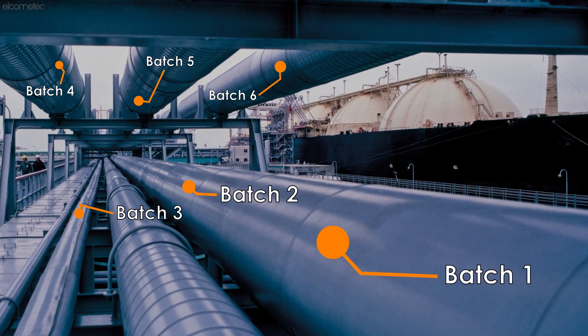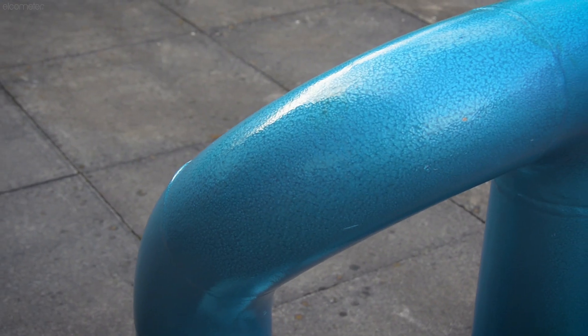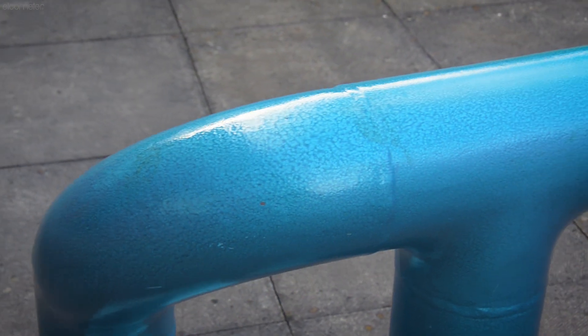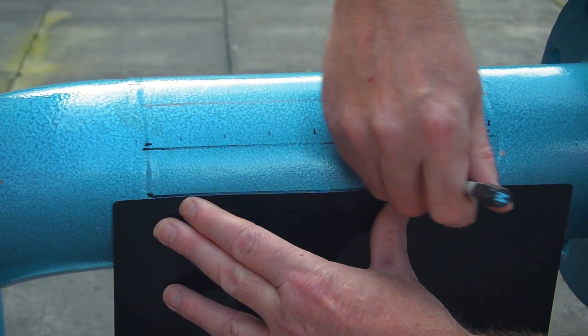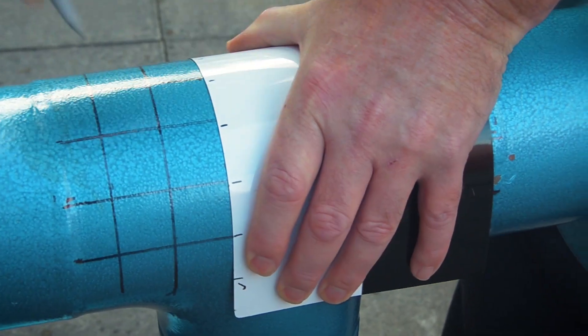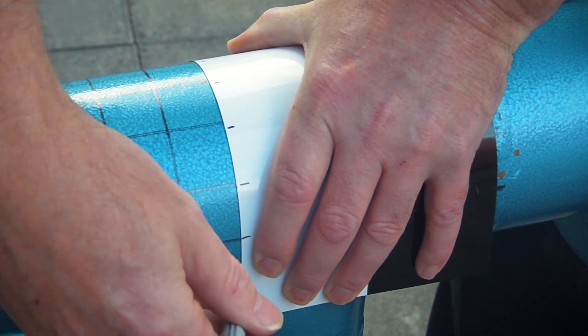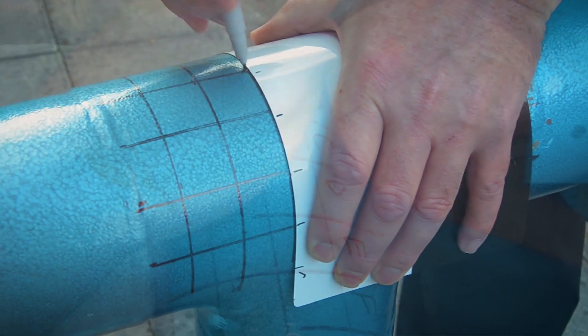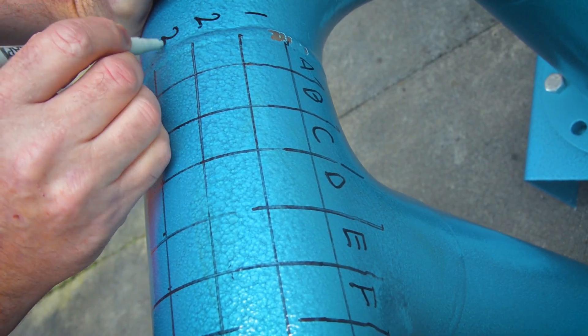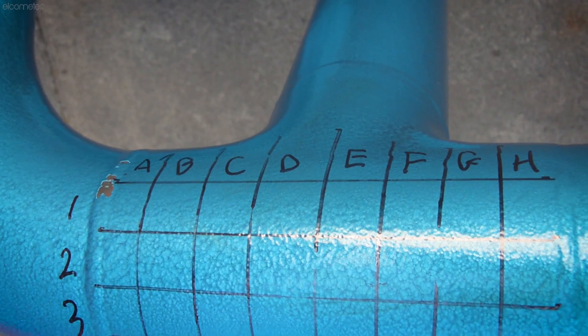So, how does it work? To get started, draw your grid on the area to be inspected. The size of your grid, where you place it, and how many grids you use on one asset, will be dependent on what it is you're inspecting, on the job specification, and or the customer requirements. But typically, once you've marked out your grid, you label your columns as letters and your rows as numbers, just like a spreadsheet.